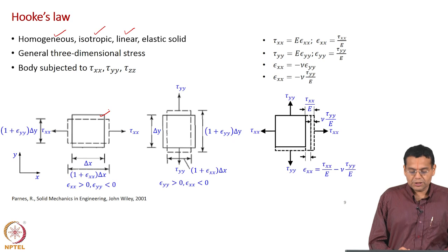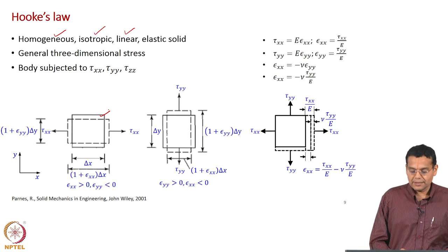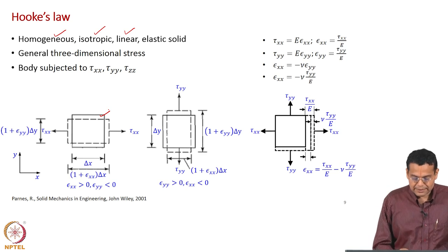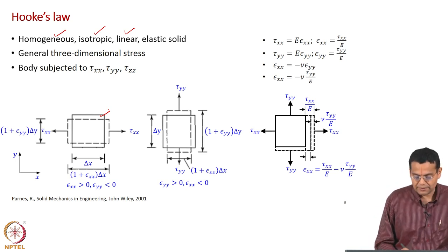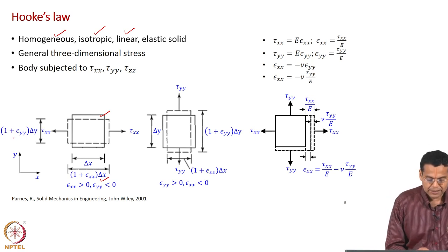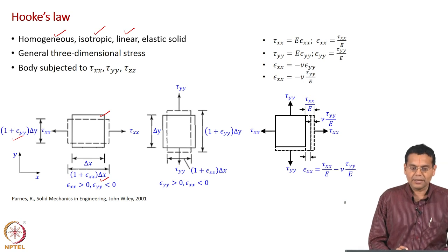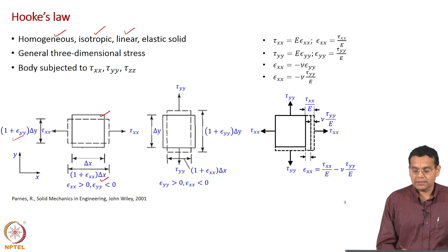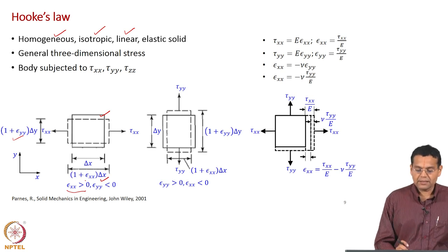The first figure shows the plate subjected to normal stress along the x direction, tau_xx, shown in tension. The changed length of the sides is also shown: (1 + epsilon_xx) times delta x. The length along the y direction changes to (1 + epsilon_yy) times delta y. There is elongation along x, so epsilon_xx > 0, and contraction along y, so epsilon_yy < 0.